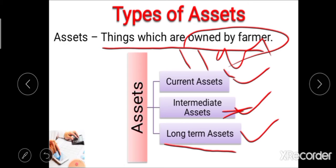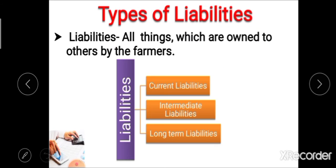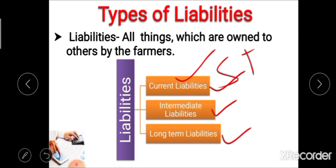These are the first component of balance sheet, that is asset — things which are owned by the farmer. After assets, the second component is liability. Liabilities are all the things which are owed to others by the farmer. There are also three types of liabilities: current liability, intermediate liability, and long-term liability, classified on the basis of the repayment period. Current liabilities can be repaid within one year or one and a half years. All short-term loans or crop loans are included under current liability.